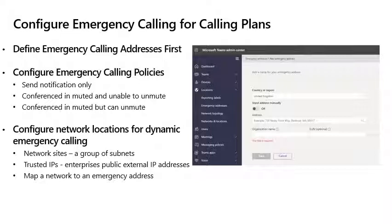As part of the configuration of emergency calling and emergency locations, we highly recommend configuring network locations for dynamic emergency calling. When you create your buildings or network locations, we recommend adding your network sites — which are groups of subnets — as well as your trusted IPs, which are your enterprise public external IP addresses, and mapping each network to a specific emergency address. For example, if your branch location is in Tampa with five different floors, you might want to consolidate all subnets for each floor to that specific emergency address.